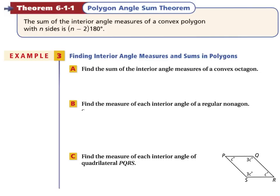In Example 3, find the sum of the interior angle measures of a convex octagon. Using the Polygon Angle Sum Theorem: 180 × (N−2). We plug in 8: 8 − 2 = 6, and 180 × 6 gives us 1,080 degrees.